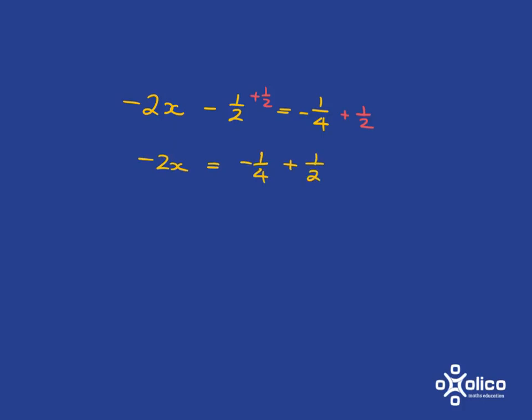Now, negative quarter plus a half is just the same as a half subtract a quarter. Common denominator of 4, so we've got a half is 2 over 4, subtract 1 over 4, and we're going to get our answer of 1 over 4.